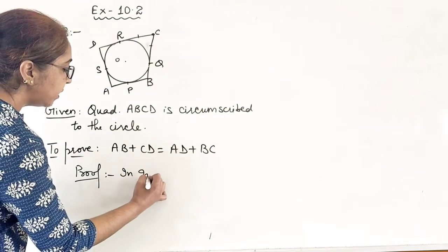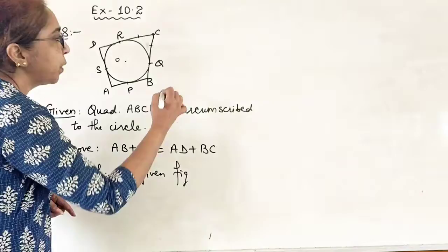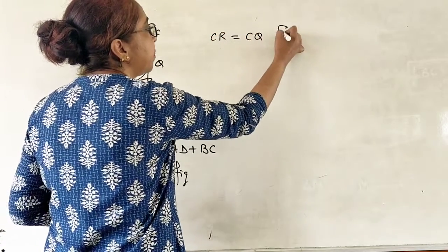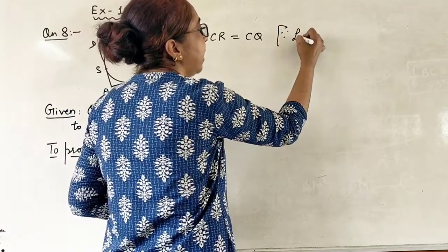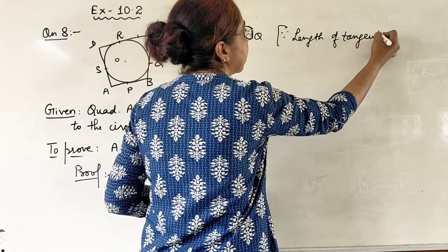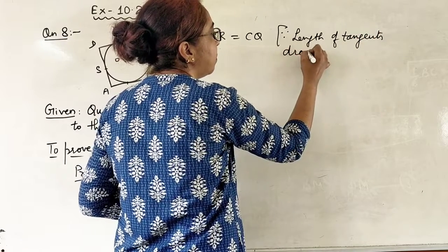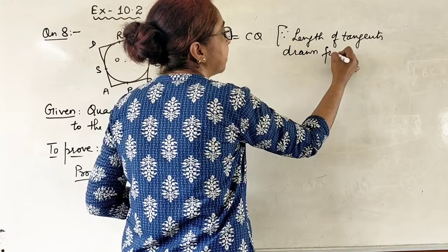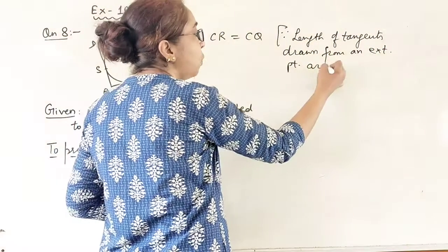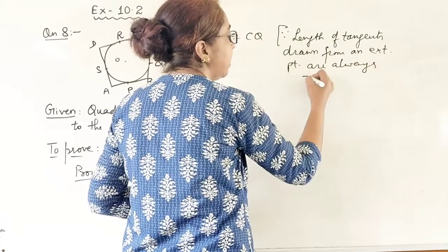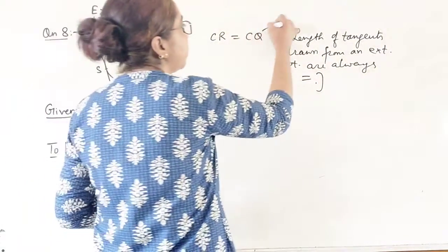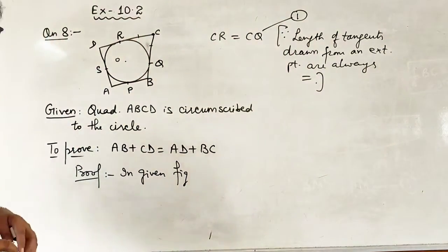So in given figure, we have CR equal to CQ and the reason is length of tangents drawn from an external point are always equal. And let us give it to this equation as number 1.